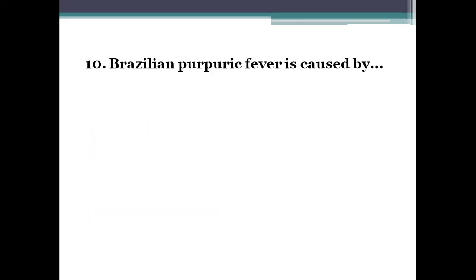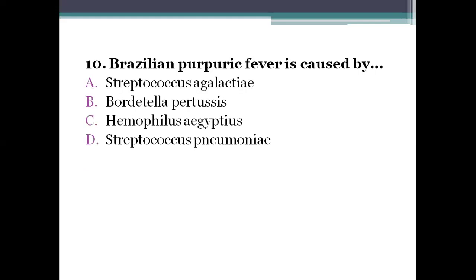Next question: Brazilian purpuric fever is caused by option A, Streptococcus agalactiae. Option B, Bordetella pertussis. Option C, Haemophilus aegyptius. Option D, Streptococcus pneumoniae. The right answer is option C, Haemophilus aegyptius. As discussed, it is characterized by conjunctivitis, high fever, vomiting, purpura, septicemia, and shock.